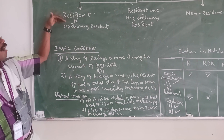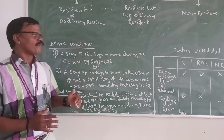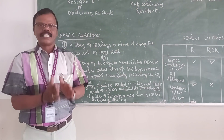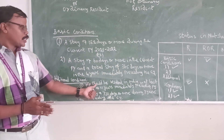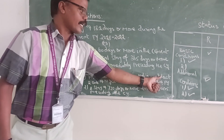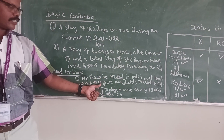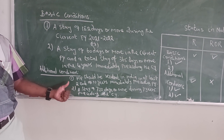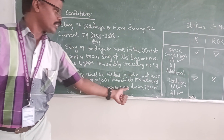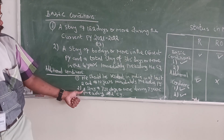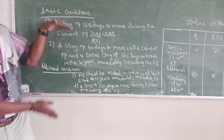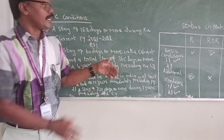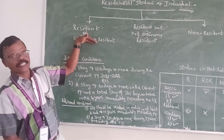Moreover, for Ordinarily Resident, the people must fulfill the basic condition as well as the additional condition. The additional conditions framed under the Income Tax Act in India are: first, he should be resident in India in at least 2 out of 10 years immediately preceding the previous year; and second, a stay of 730 days or more during the 7 years preceding the current year. If both basic and additional conditions are fulfilled, the person is called Ordinarily Resident — Resident and Ordinarily Resident.